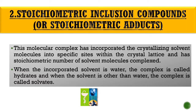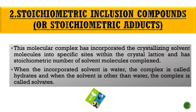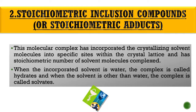What is meant by hydrates? When the incorporated solvent is water, the complex is called hydrates. Depending on the ratio of water molecules within a complex, the following nomenclature is followed: Anhydrous — one mole compound plus zero moles water; Hemihydrate — one mole compound plus half mole water; Monohydrate — one mole compound plus one mole water; Dihydrate — one mole compound plus two moles water.